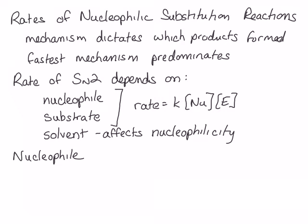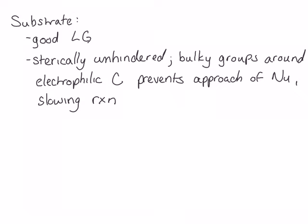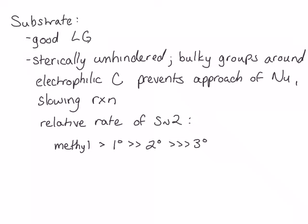Stronger nucleophiles react more quickly; therefore, stronger nucleophiles increase the rate of an SN2 reaction. The substrate for an SN2 reaction needs to have a good leaving group, and also should be sterically unhindered, because having bulky groups on the electrophilic carbon prevents the approach of the nucleophile and slows the reaction. Therefore, a methyl substrate reacts most quickly, whereas a tertiary substrate reacts most slowly in an SN2 mechanism. Methyl and primary substrates react rapidly; secondary substrates react sluggishly; and tertiary substrates react so slowly that this reaction tends not to occur in any significant amount.